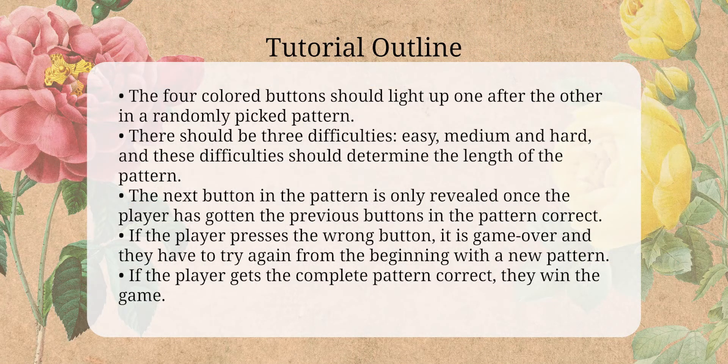Now let's have a look at the tutorial outline. We're going to have 4 colored buttons that are going to light up one after the other in a randomly picked pattern. There should be 3 different difficulties — easy, medium, and hard — and they are going to determine the length of the pattern. The next button in the pattern is only revealed once the player has gotten the previous buttons correct. If the player presses one button wrong, it's game over and they have to try again, but if they get the pattern correct, then they win.